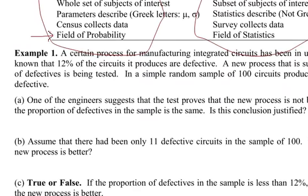Mostly we work with the population in probability, because we're thinking if we had the entire population, here's a model or equation that models that situation. And when we talk about a sample, we just collect some data — and this, to me, is usually the statistics side.